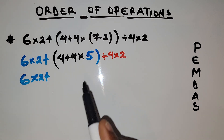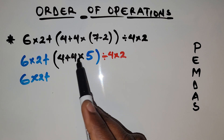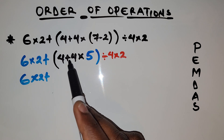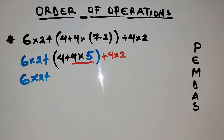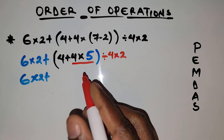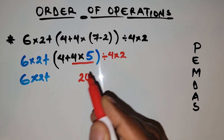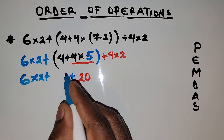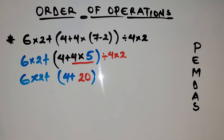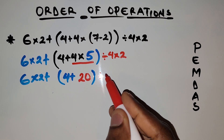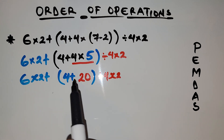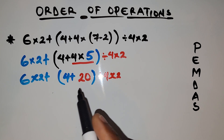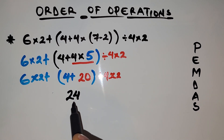We have 4 plus 4. Now we can't just add 4 plus 4 because our rule says modification comes before addition. So we want to tackle the modification first, which is 4 times 5. 4 times 5 gives us 20. So we have 4 plus 20, which is 24. Now we have solved the parentheses.